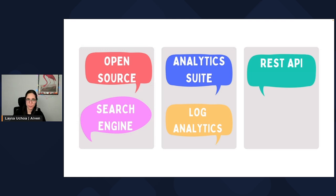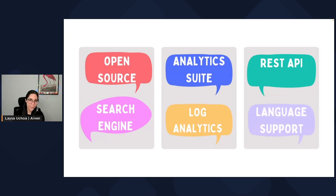Also, if you are familiar with REST API, and maybe you're working already as a backend developer, you can use a REST API with OpenSearch. So you don't need any other programming language. But of course you can also use Python, Go, Java, Node.js — it has a lot of other clients that you can use to interact with an OpenSearch cluster. So these are some of the cool features of OpenSearch.